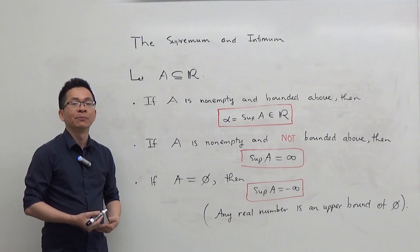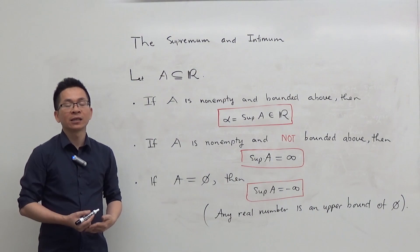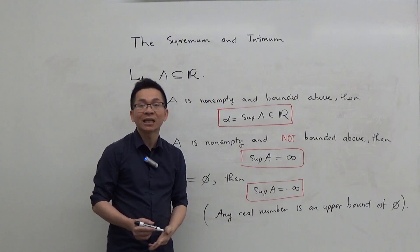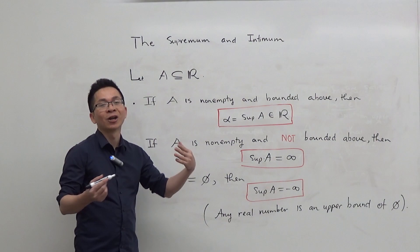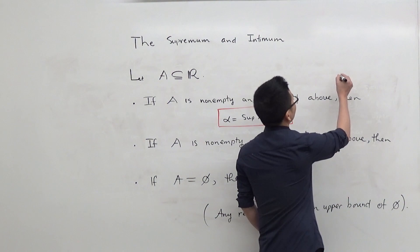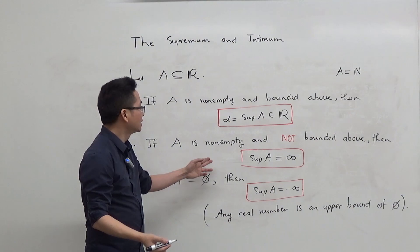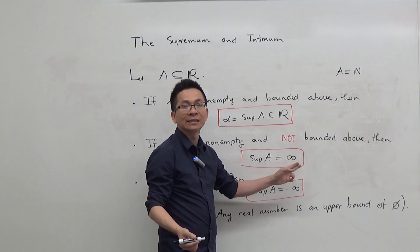To continue, I'm going to give some conventions that give us a complete picture of the supremum of a set. Let A be a subset of the real line. First, if A is non-empty and bounded above, by the completeness axiom the supremum of A exists as a real number. Now, what if A is non-empty and not bounded above? For example, if A is the set of all natural numbers, then it is not bounded above and doesn't have any upper bound. By convention, the least upper bound of A is infinity, or the supremum of A is infinity.